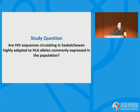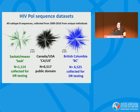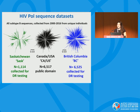Given reports of unusually rapid disease progression in Saskatchewan and the comparatively lower HLA allelic diversity of the at-risk population, the objective of our study was to investigate whether HIV sequences circulating in Saskatchewan are highly adapted to HLA alleles commonly expressed in this population, such as HLA-B51. We have subtype B HIV pol sequences collected from unique individuals between 2000 and 2016 from three regions: Saskatchewan (~1,100 sequences, >65% of all HIV infections since 1985), a continental comparison dataset of ~6,500 sequences from the rest of Canada and the US, and ~6,500 sequences from British Columbia.